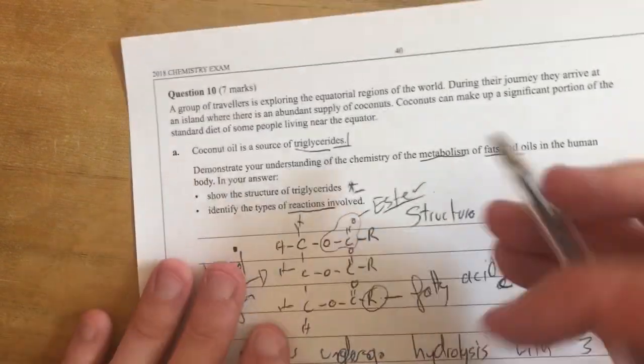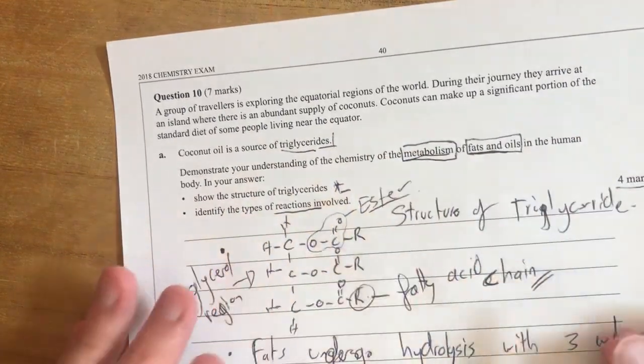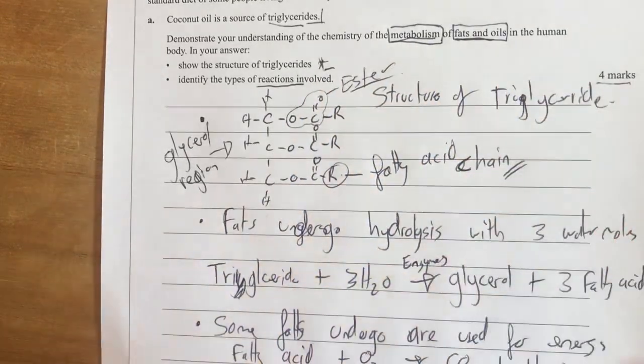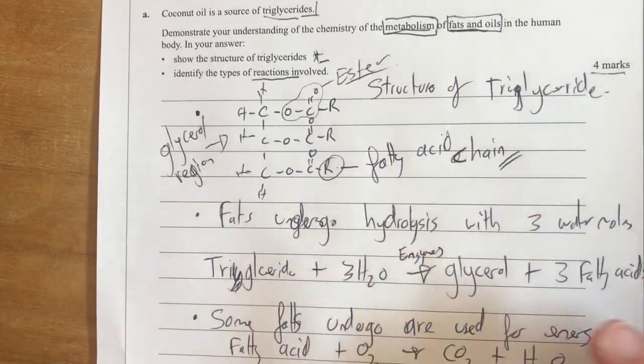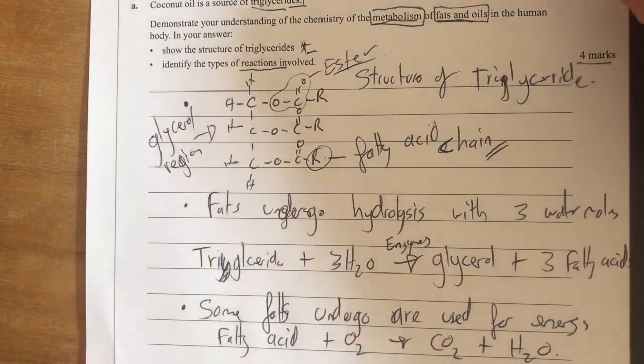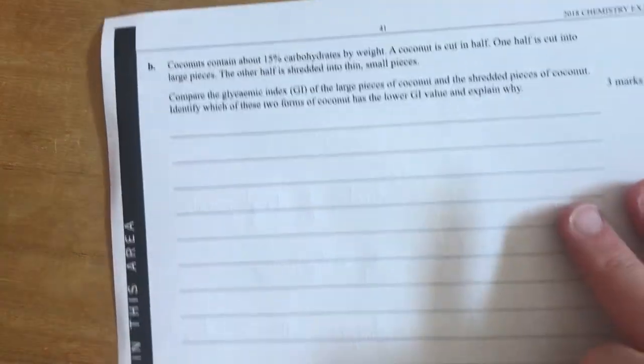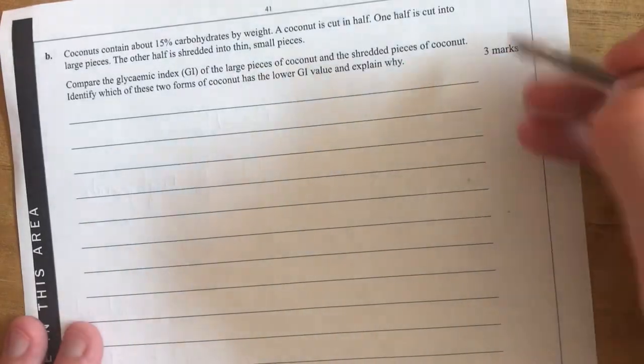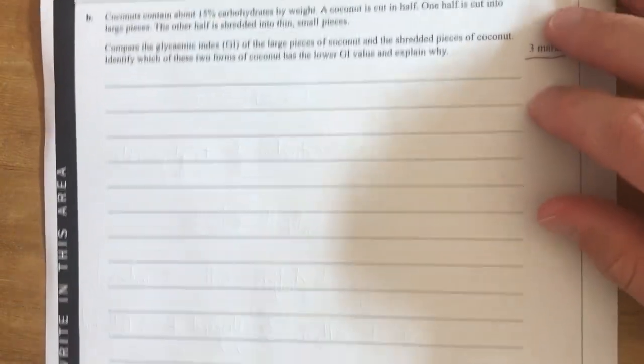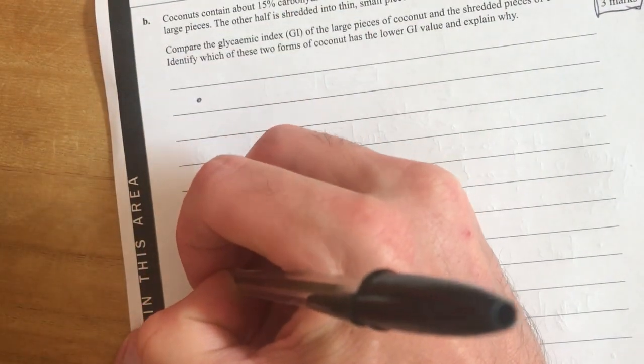And because this topic was the metabolism of foods or fats and oils in particular, I pretty much wrote everything I knew about that topic which is what these questions are. It's basically tell me what you know, brain dump your information here and then hopefully you'll get some marks for it. Part B, let's have a look at part B. Part B is only worth three marks and again you've got a large section of lines to write for but it's still only worth three marks. So let's dot point out three things relatively evenly spaced on there so we can then write to those dot points.